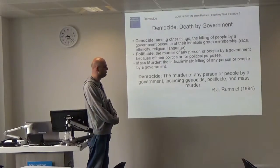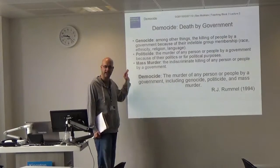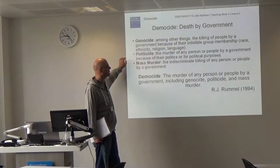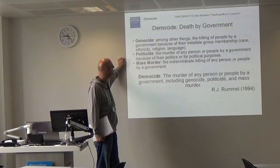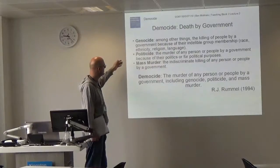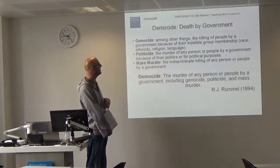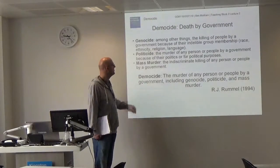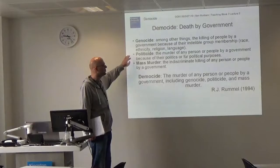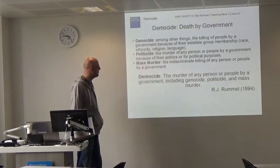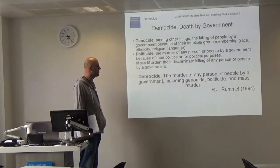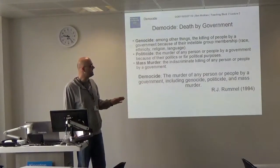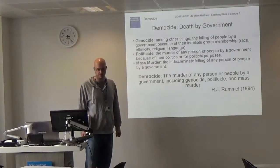Now we've got this understanding, we're going to move on to this idea called democide. This was put forward by a gentleman called R.J. Rummel in 1994. There's a wonderful book called 'Death by Government' where he effectively describes what he calls 'mortocracies' — governments throughout history which have murdered their populations. He describes democide under three following terms: first, genocide — the killing of a people by government because of their indelible group membership such as race, ethnicity, religion, or language. Second, politicide — the murder of any persons by a government because of their politics or for a political purpose. And finally, mass murder — the indiscriminate killing of any person or people by a government. Democide is defined as the murder of any person or people by government, including genocide, politicide and mass murder.